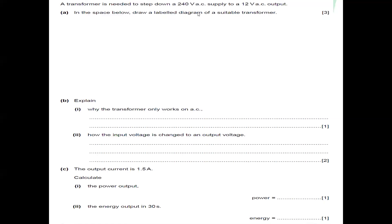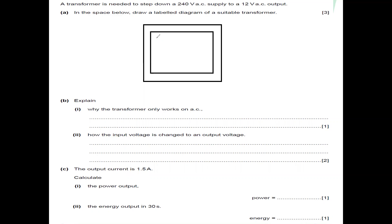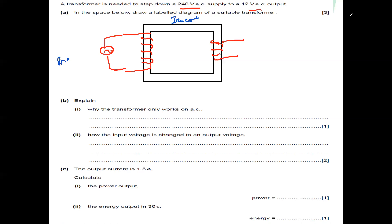Another question: a transformer steps down 240 volts to 12 volts. Draw a labeled diagram. A step down transformer has more turns on the primary and fewer on the secondary. The diagram should clearly show the primary coil with more turns, the secondary coil with fewer turns, the iron core, the AC supply connected to the primary, and labels for all components. Both coils are made of copper.